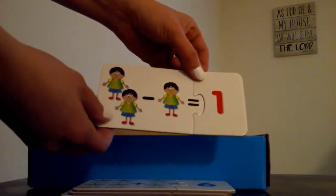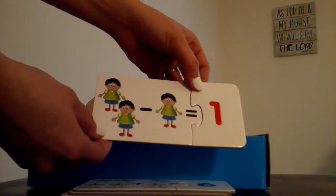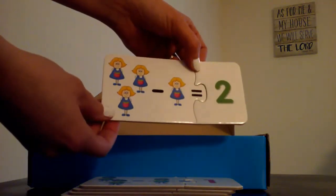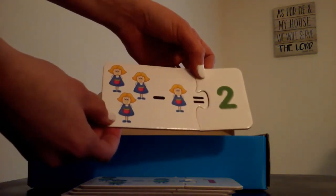The third type of puzzle is subtracting. You have 2 boys minus 1 boy equals 1, you have 3 girls minus 1 equals 2.